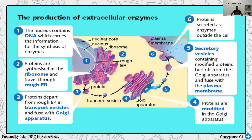Continuing the journey from the ribosome: transport vesicles branch out from the rough endoplasmic reticulum and move into the Golgi apparatus, where the protein is modified and processed. From there, they pinch out into secretory vesicles projected from the Golgi apparatus, containing the modified protein — now ready to function as an enzyme. When the secretory vesicle fuses with the plasma membrane, it releases the enzymes out of the cell. So the nucleus and ribosome produce the protein, which is carried by transport vesicles to the Golgi apparatus for modification, then released via secretory vesicles.